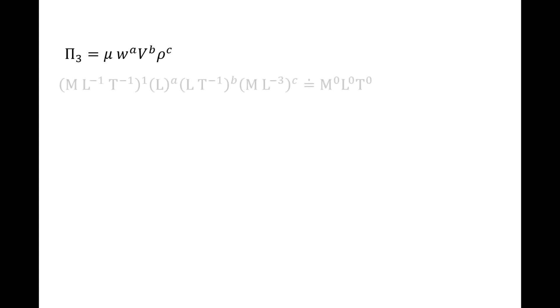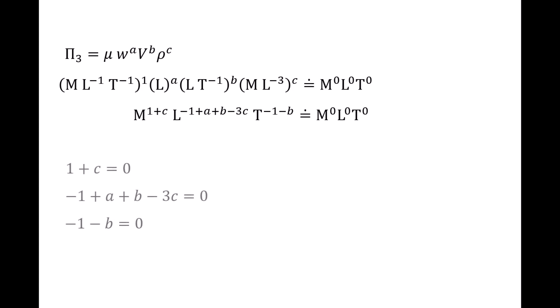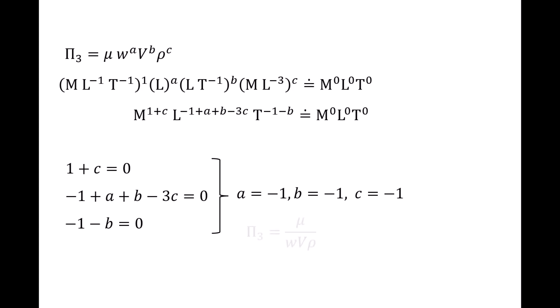We now create the final pi group, pi 3, which is equal to mu times w to the a, v to the b, rho to the c. We plug in the dimensions, distribute exponents, and combine terms. The left side gives mass to 1 plus c, length to negative 1 plus a plus b minus 3c, and time to negative 1 minus b. Equating exponents: 1 plus c equals 0, negative 1 plus a plus b minus 3c equals 0, and negative 1 minus b equals 0. Solving gives a equals negative 1, b equals negative 1, and c equals negative 1. Therefore, pi 3 is mu over w v rho.